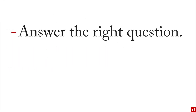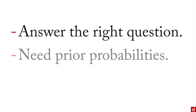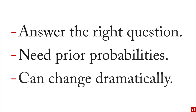In sum, Bayes' theorem allows you to answer the right question people really want to know: what's the probability that I have the disease, as opposed to what's the probability of getting a positive if I have the disease? They want to know whether they actually have the disease. To do this — and this is the big trick — you need prior probabilities: you need to know how common the disease is and how many people get positive test results overall. But if you can get that information and run it through, it can change your answers, and really the emotional significance of what you're dealing with, dramatically.